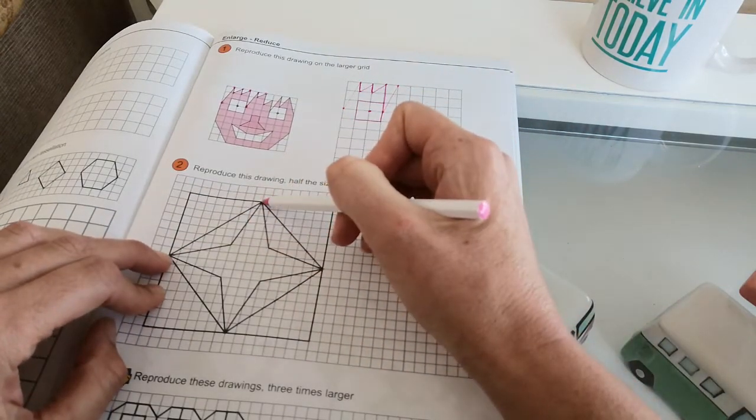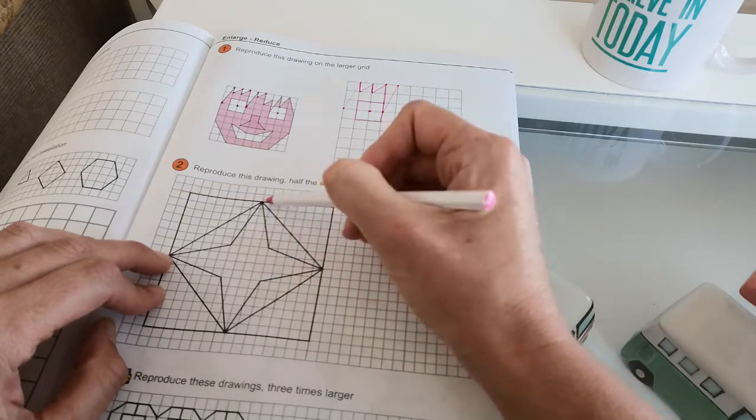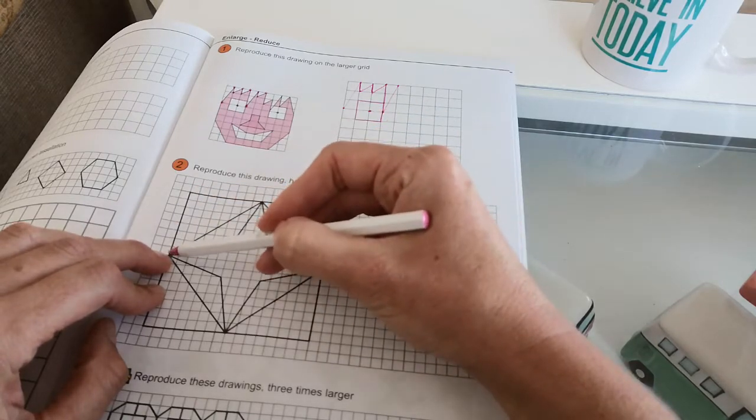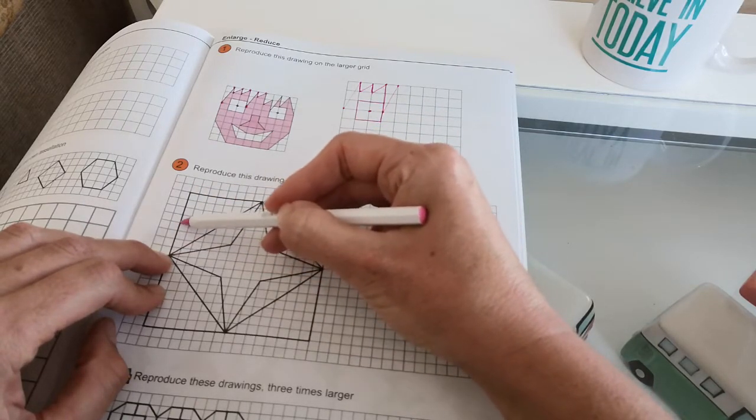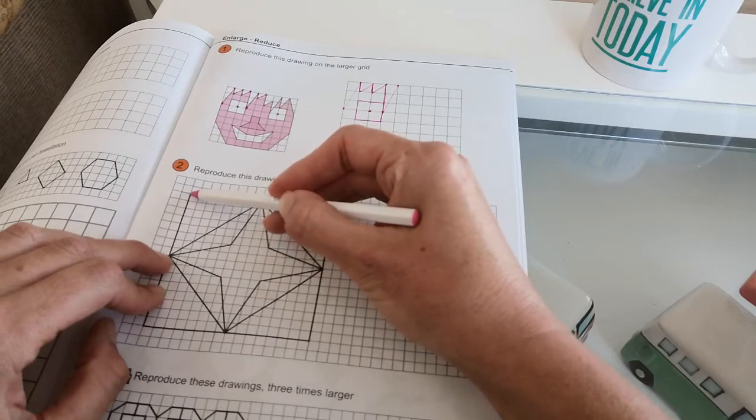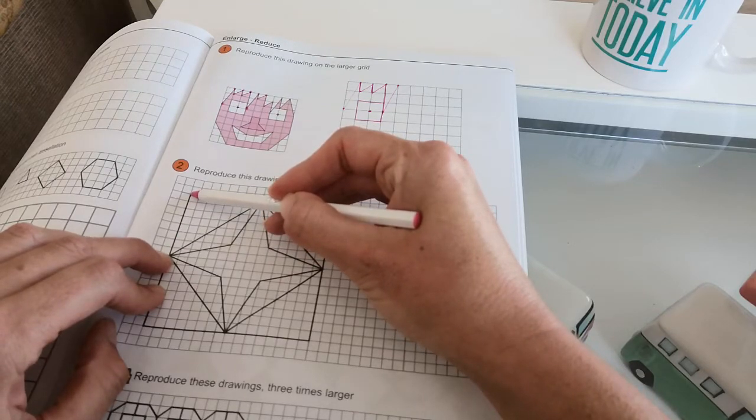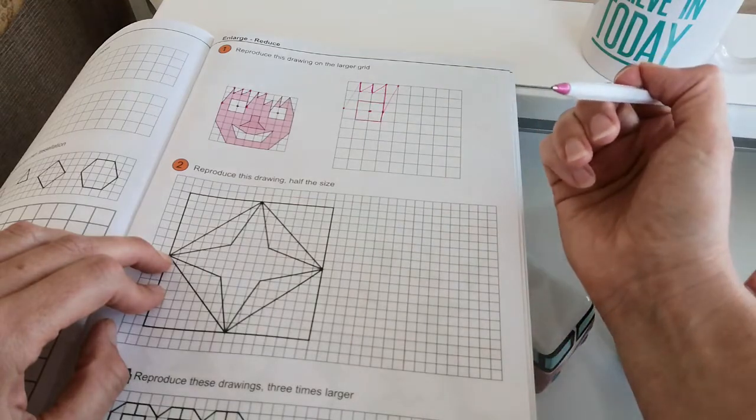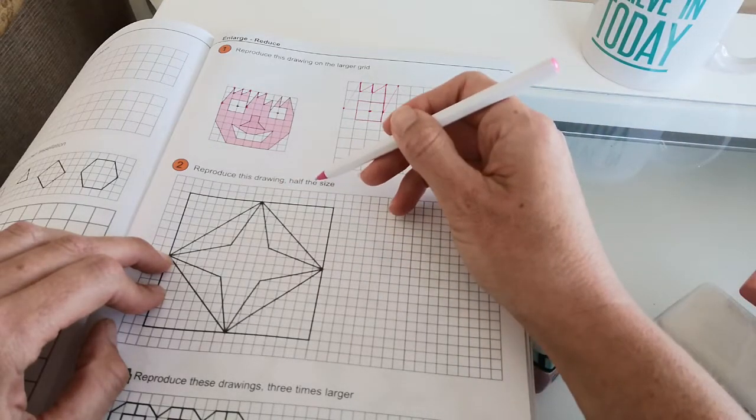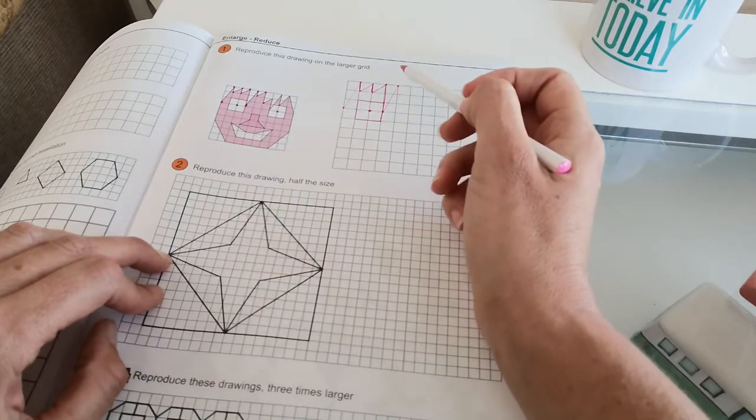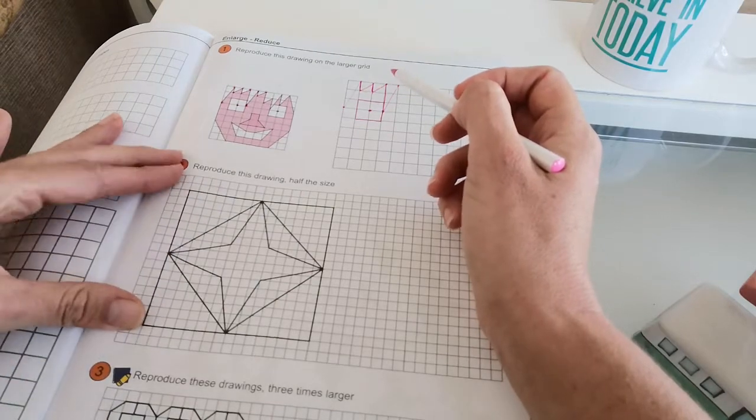So you can see here that we have a triangle, an isosceles triangle that makes up this part, and the isosceles triangle is one, two, three, four, five, six, seven, eight squares in length over here. How many squares do you think it's going to be if it's half the size in length? It's going to be four squares in length. Okay, now before we get into that, let's draw the square that we're going to use.